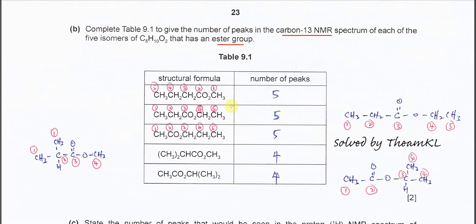For the first isomer, look at the carbons and count the non-equivalent carbons. The first isomer has 1, 2, 3, 4, 5 different carbons, so you see 5 peaks in the carbon-13 NMR.